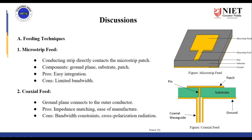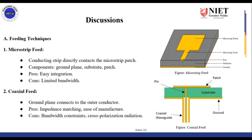To go one step ahead, we have the Coaxial Feed Technique. In the Coaxial Feed Technique, we have a coaxial waveguide inside through which there is a pin that is connected to the patch through the substrate. Here, impedance matching is much easier and more accurate. However, the limitations include bandwidth constraints as well as cross-polarization radiations.